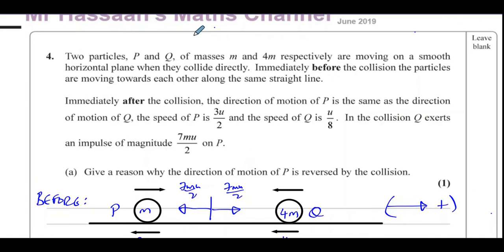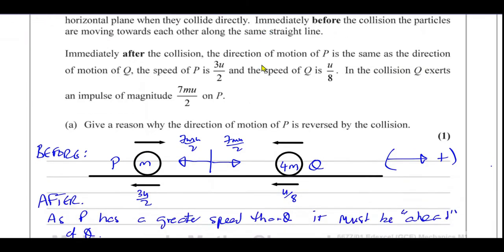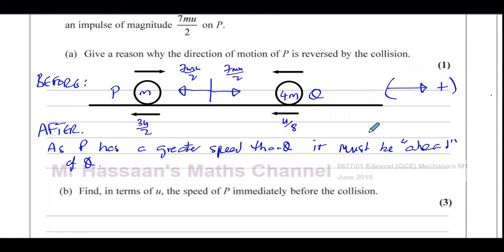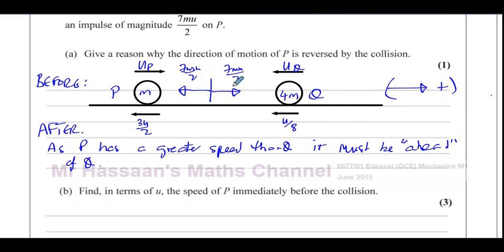Now for part B: we are asked to find, in terms of U, the speed of P immediately before the collision. We don't have the speed of Q before the collision, so we can't use conservation of momentum — there would be two unknowns. What I have to use is the fact that I know the magnitude of the impulse, which is 7MU over 2.